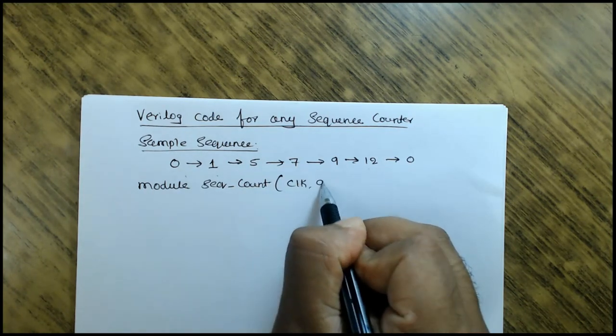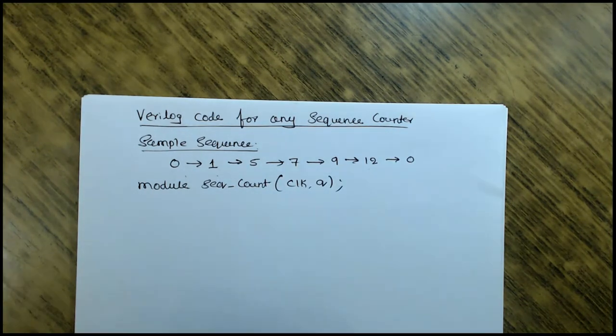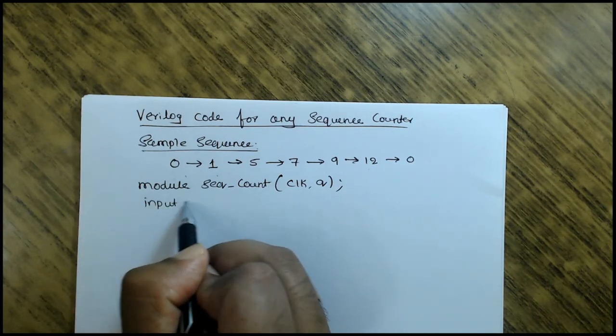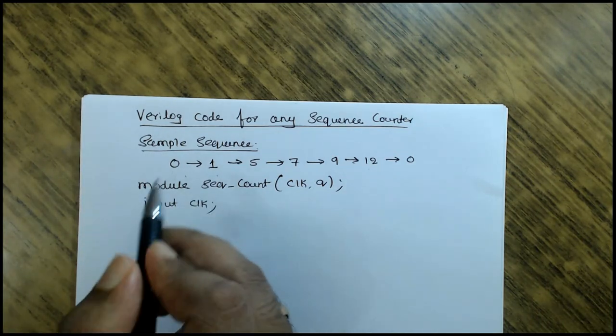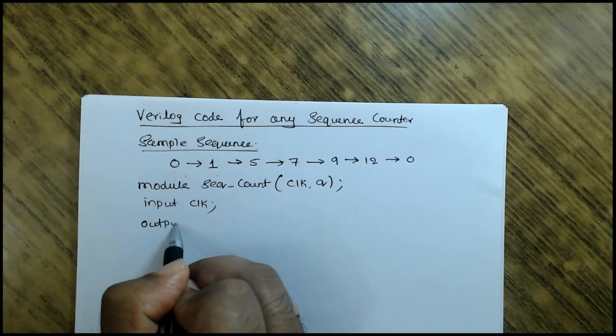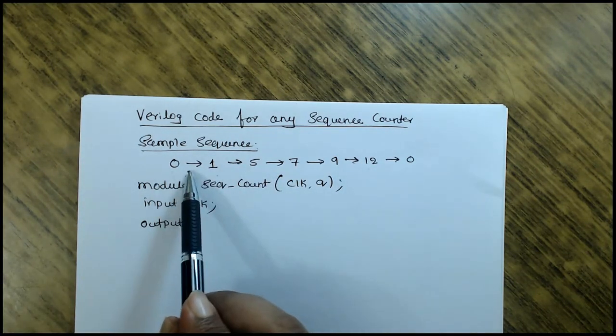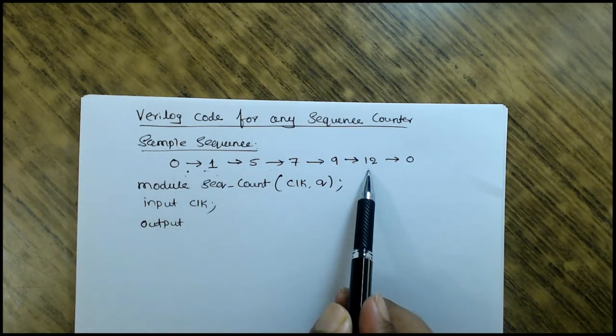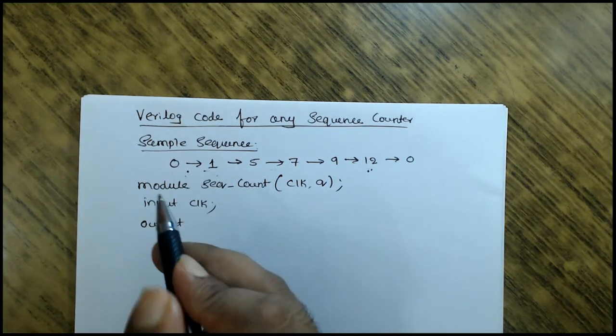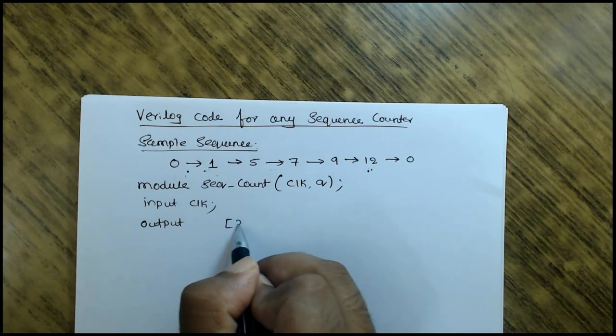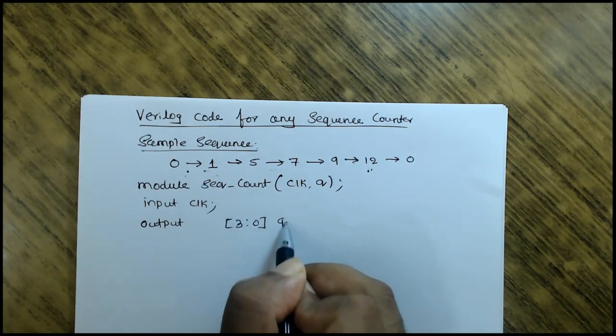Clock and Q - only these things are sufficient. Input is clock, output is - how many bits are needed for the output? You need to decide what is the highest number. Here 12 is the highest number. For 12, 4 bits are sufficient, so I declare it as [3:0] Q.